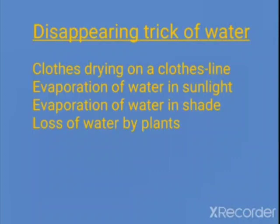What happens to the water that rain and snow bring to different regions of the earth? Almost all land surfaces are above the level of the ocean. Most of the water that falls on land as rain or snow sooner or later goes back to the oceans. Snow in the mountains also melts into water and flows down as streams and rivers.